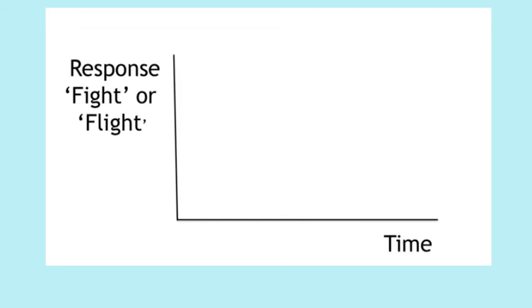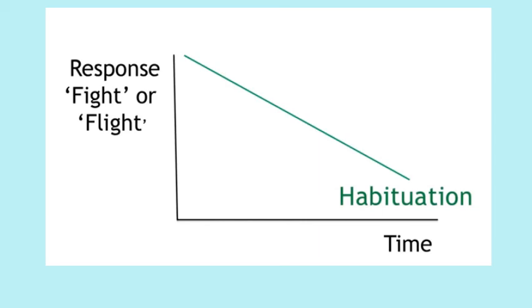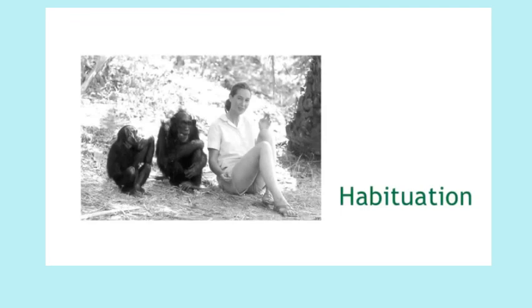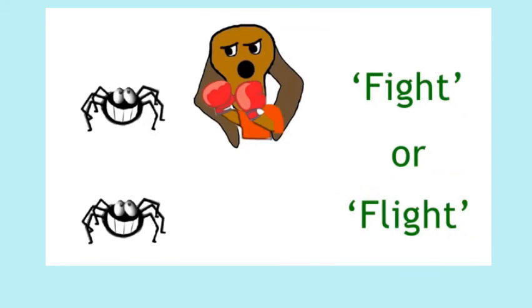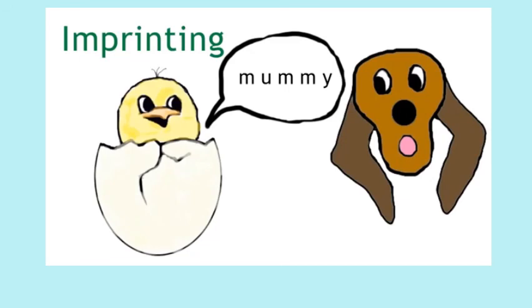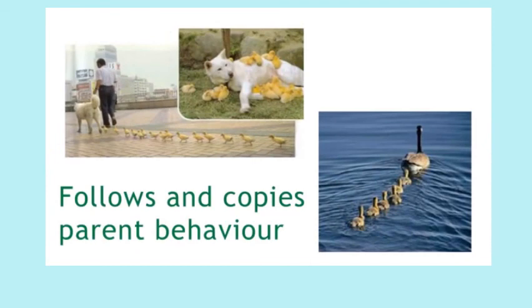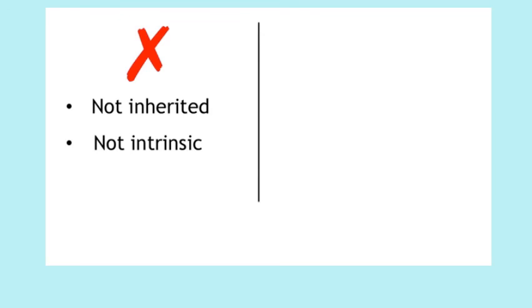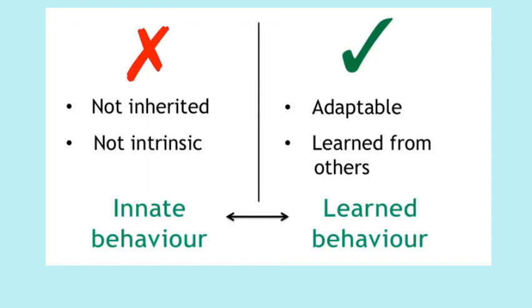Habituation is a type of learned behavior where if an individual is repeatedly exposed to a stimulus the response decreases — the individual becomes habituated and learns to ignore the stimulus. This can happen when wild animals continually come into contact with humans; over time their frightened flight response decreases. Imprinting is another type of learned behavior where a very young animal fixes its attention on the first thing it hears, sees, or touches and then follows that object — usually its parent. Learned behavior is not inherited, not intrinsic, may change and adapt over time, and is learned from other individuals.